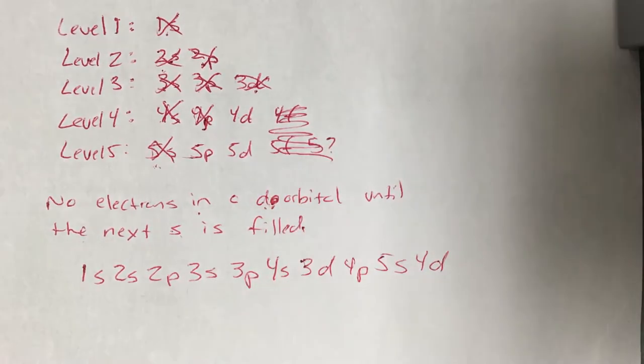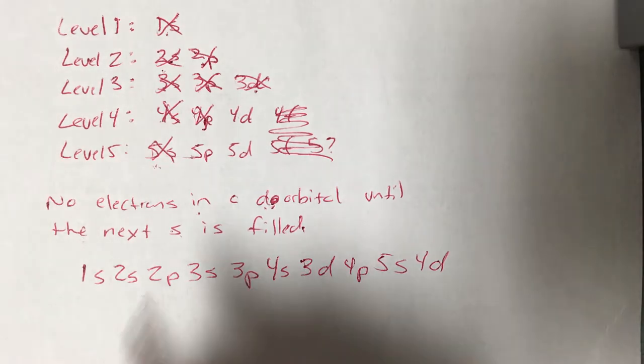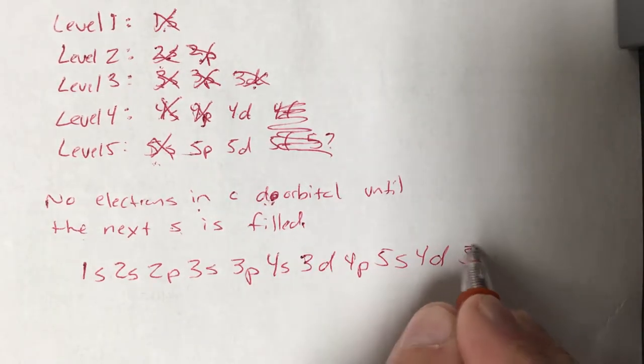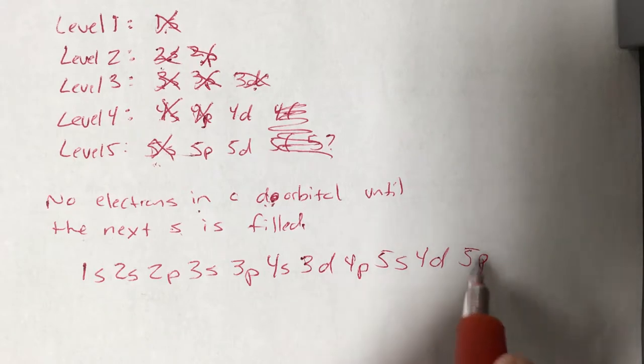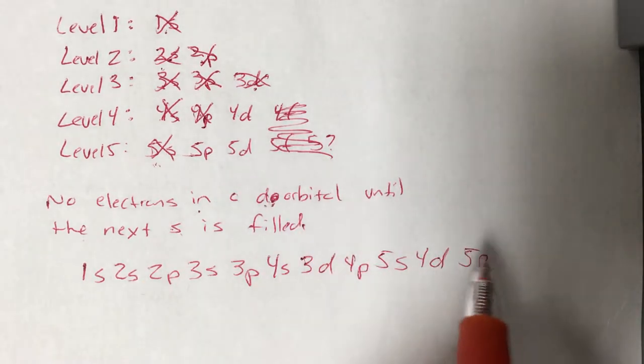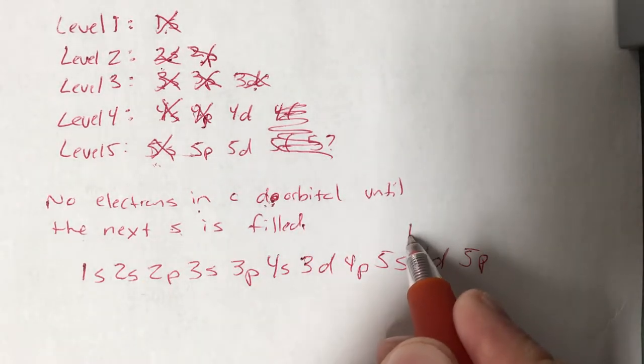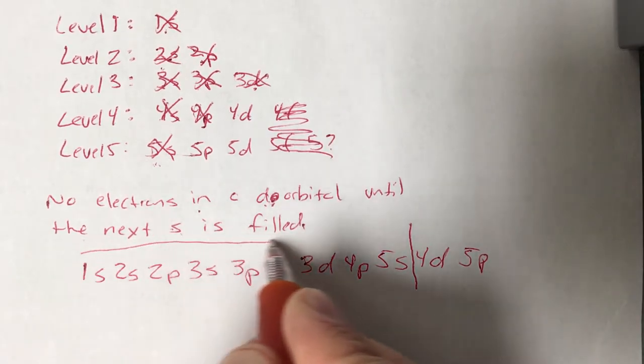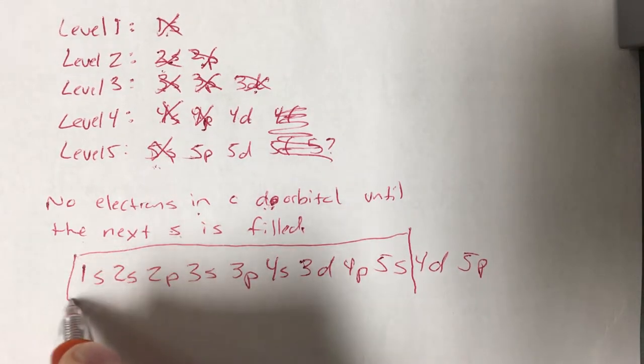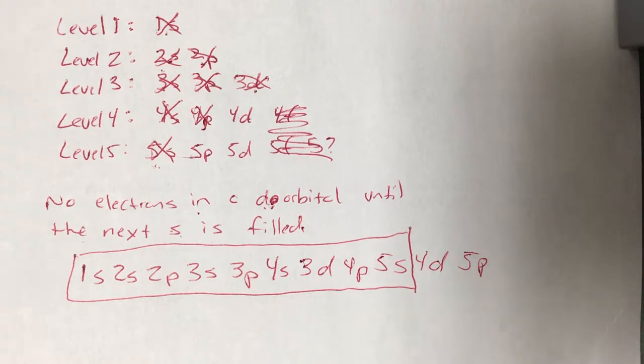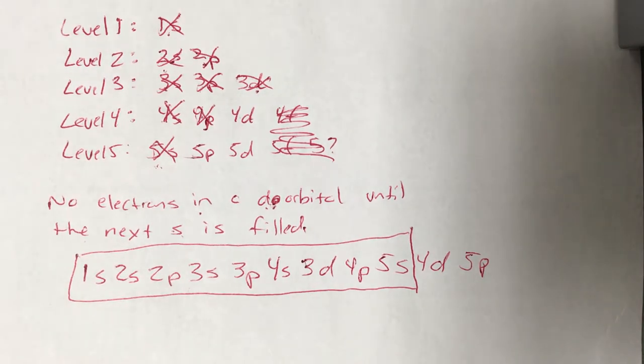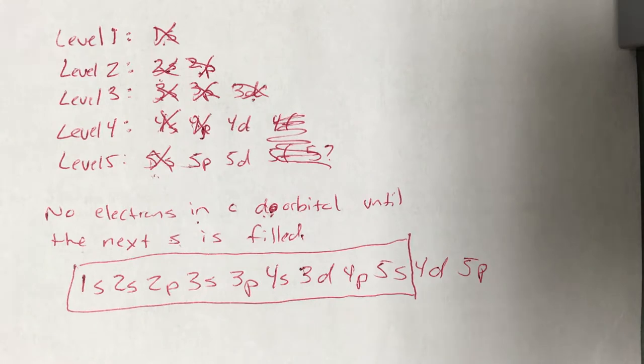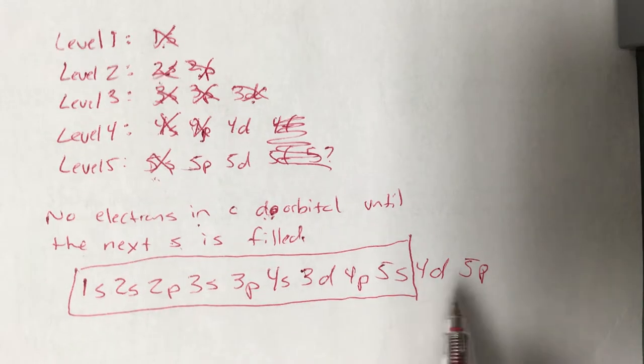Again, we're not doing anything with f orbitals, so we don't have to worry about those. 5p would be next, but we're never going to get that far. So if you can get your list written down to 5s, you've got the standards covered. As the standards say, we're only supposed to go to number 38, you're only supposed to go to strontium, and that's all you need to get to strontium. So if you can get there, just doing this whole thing, just remembering this: don't put anything in a d until the s's are filled, you're good to go.